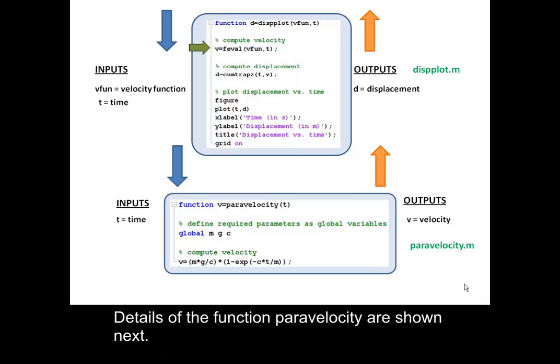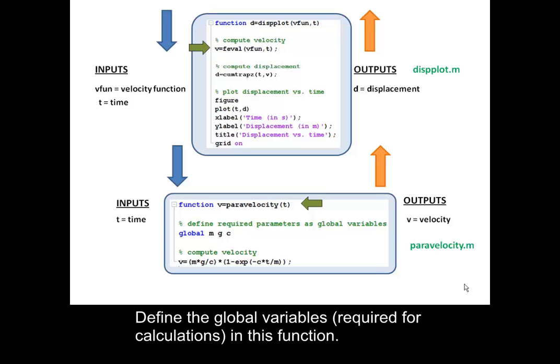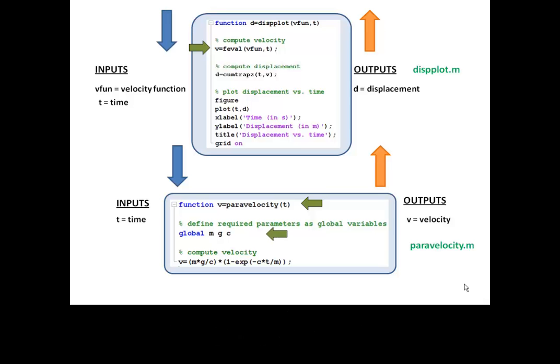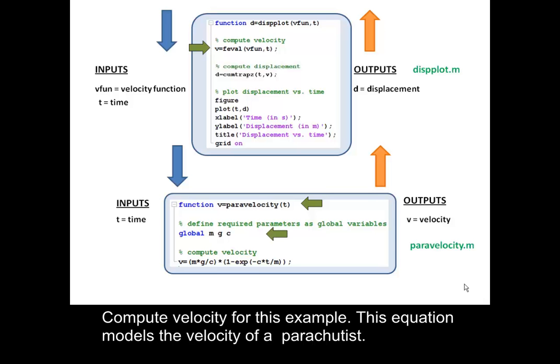Details of the function PARA VELOCITY are shown next. Define the global variables required for calculations in this function. Compute velocity for this example. This equation models the velocity of a parachutist.